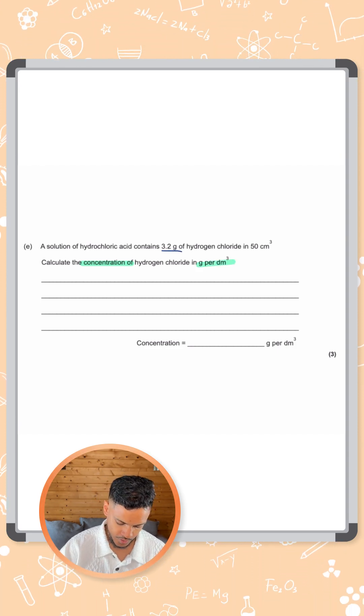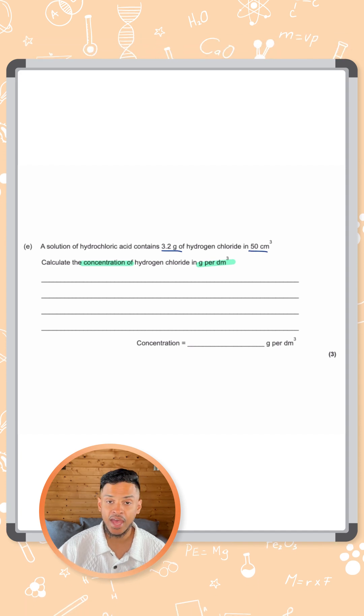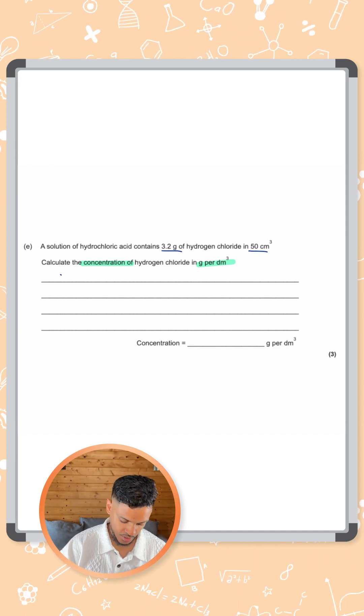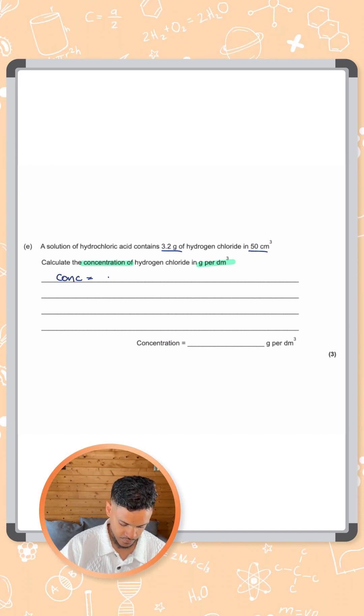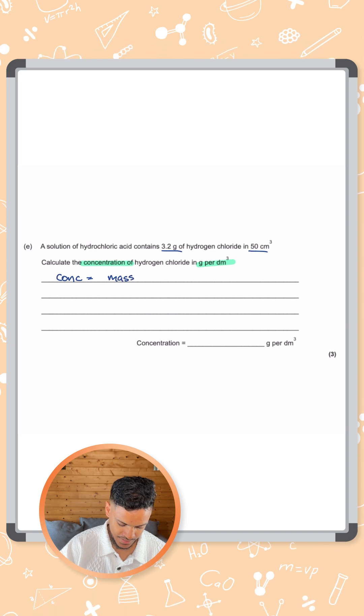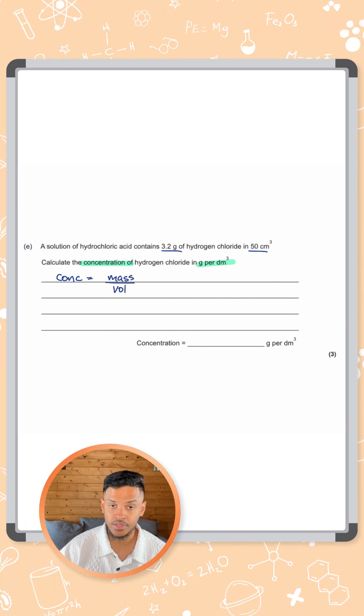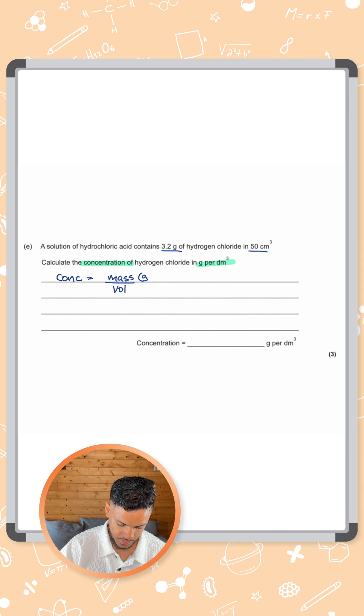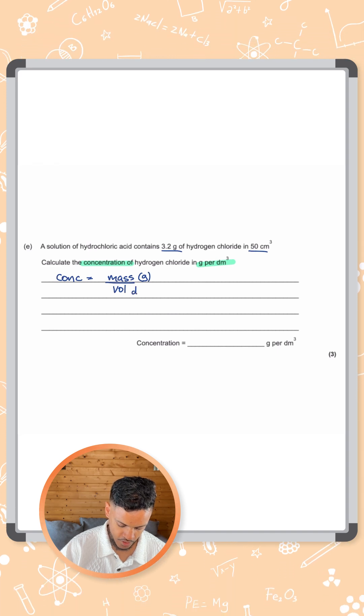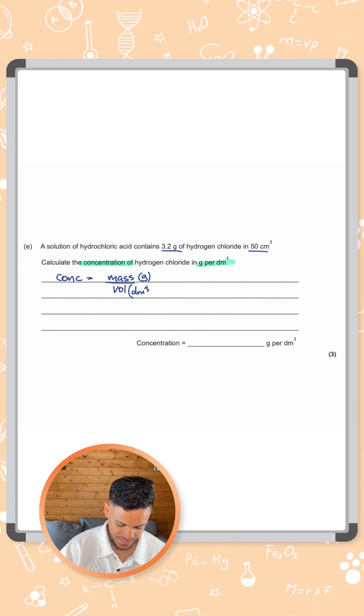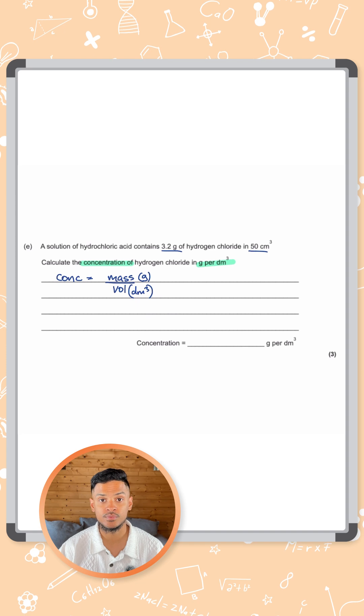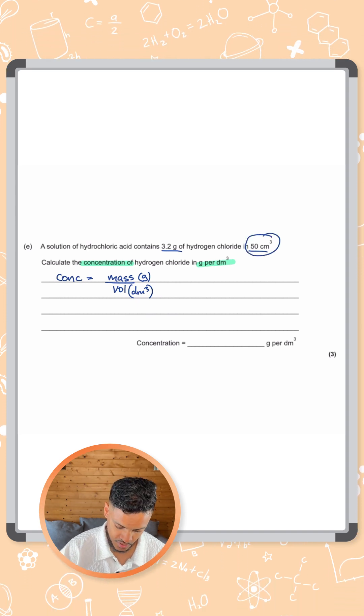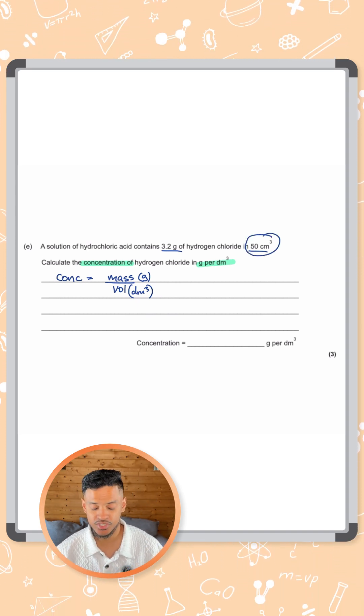So we need to use these numbers and put it into the equation here. The equation for concentration is equal to mass over volume. But what you need to remember here is mass is measured in grams, but volume needs to be measured in dm cubed, decimeters cubed, not centimeters cubed like it is in this question.